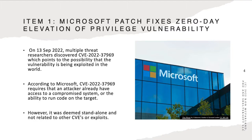Item one: Microsoft Patch fixes zero-day elevation of privilege vulnerability. We've talked about zero-day vulnerabilities before — they're undiscovered, and oftentimes you find them on the dark web initially, before cybersecurity researchers and companies get a hold of them and apply patches. On September 13th, 2022, multiple threat researchers noted a vulnerability adopted as CVE-2022-37969. We've talked about the National Vulnerability Database, and I'll emphasize some things here for your educational enjoyment.